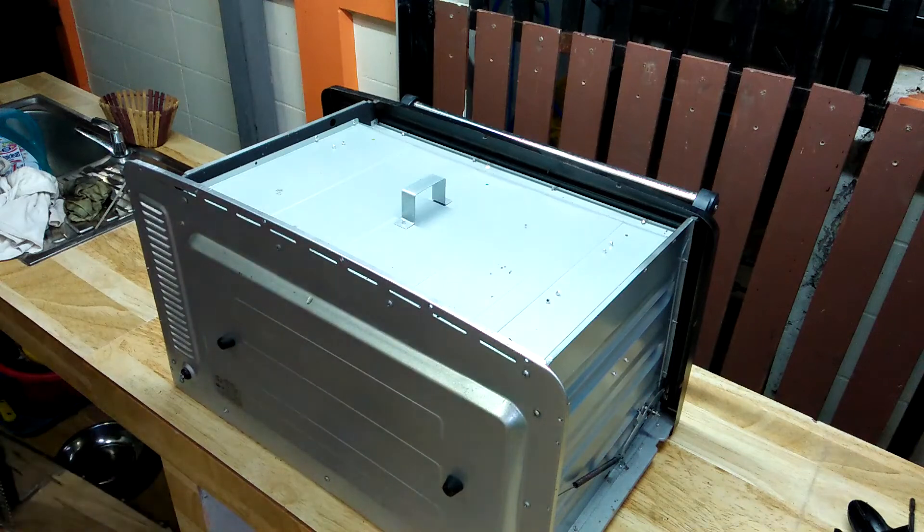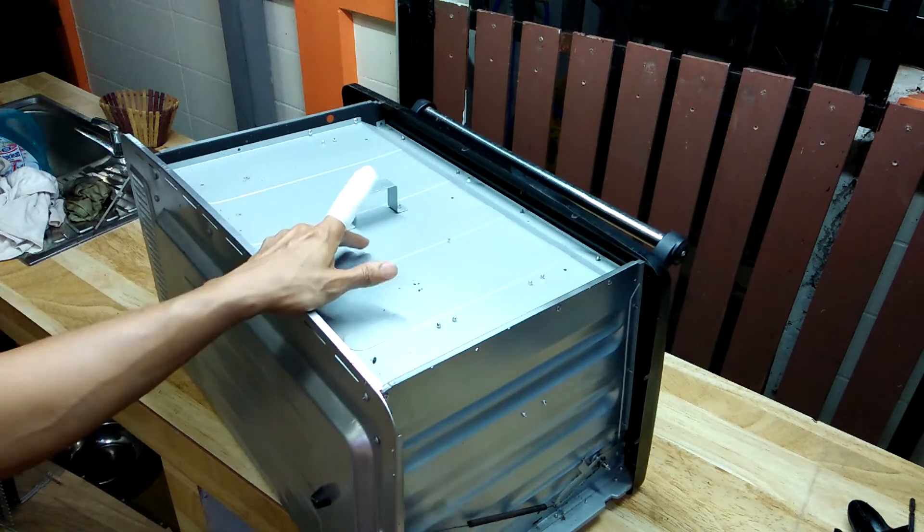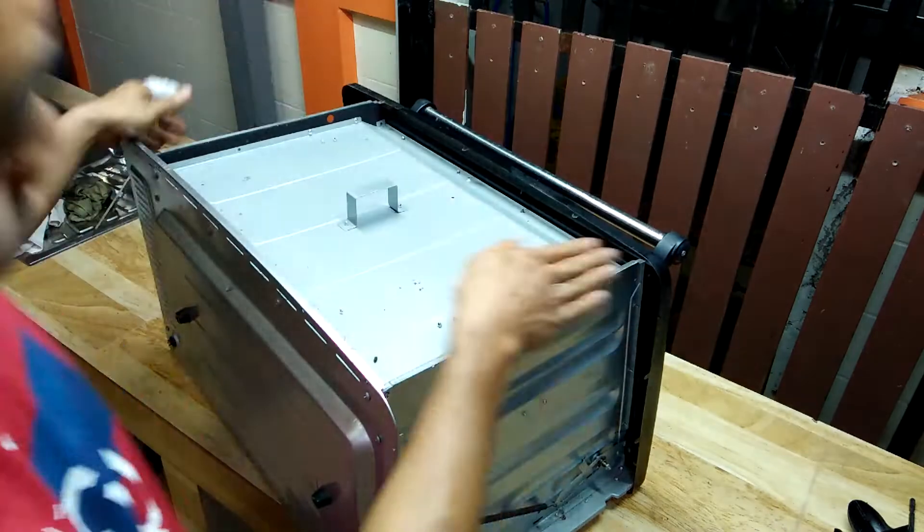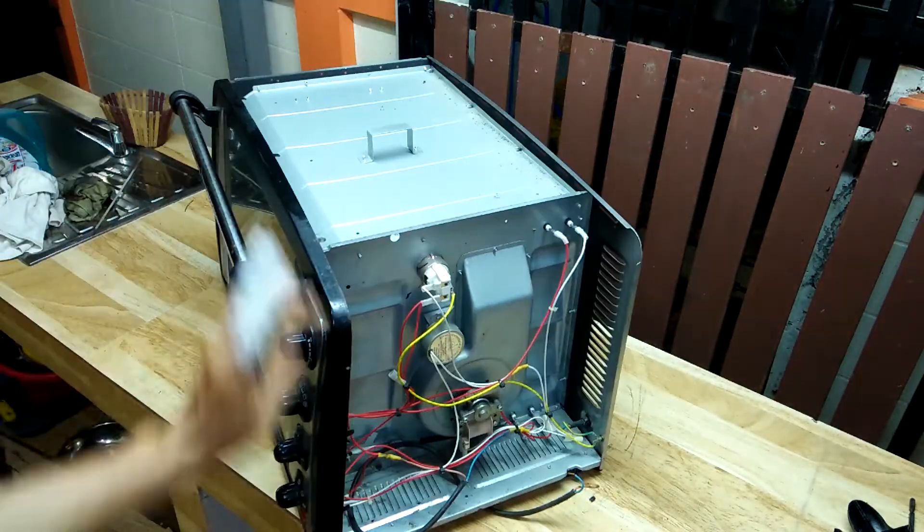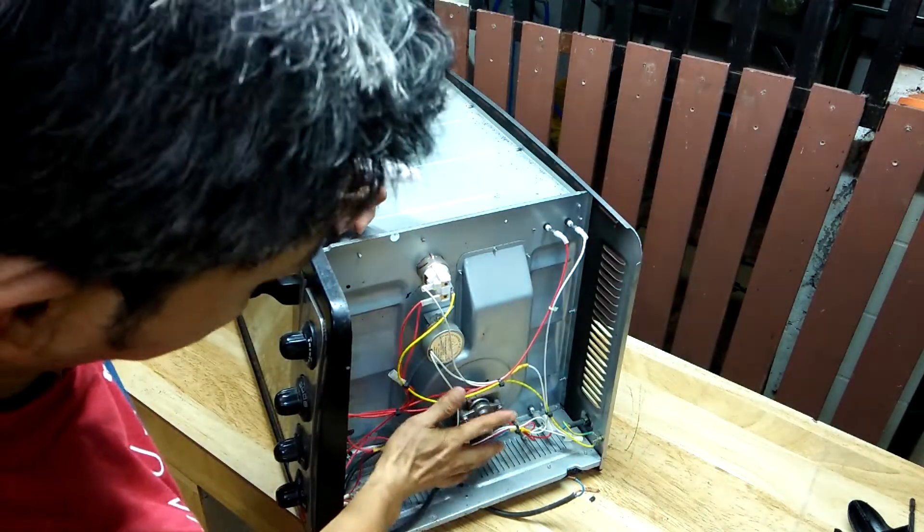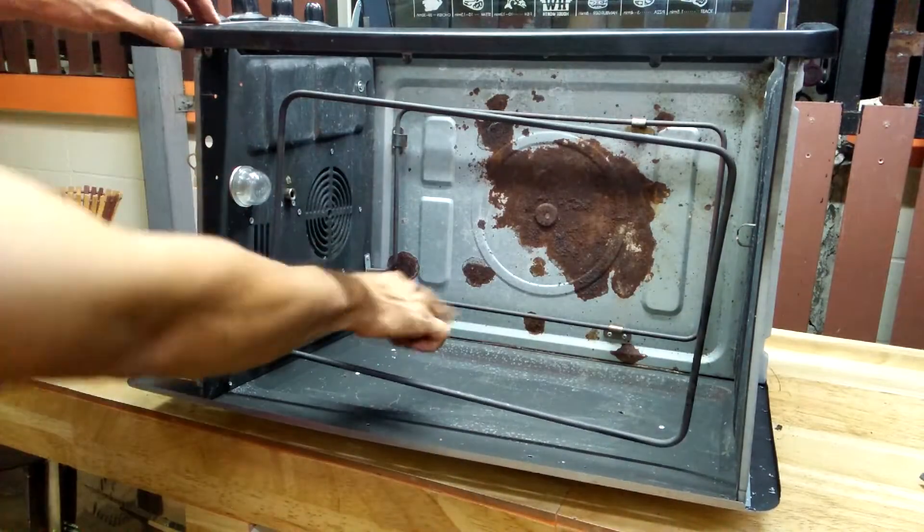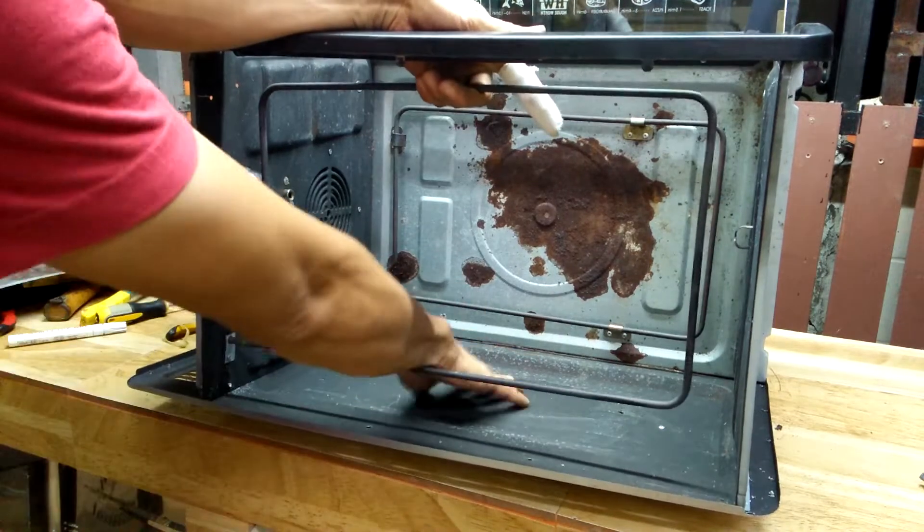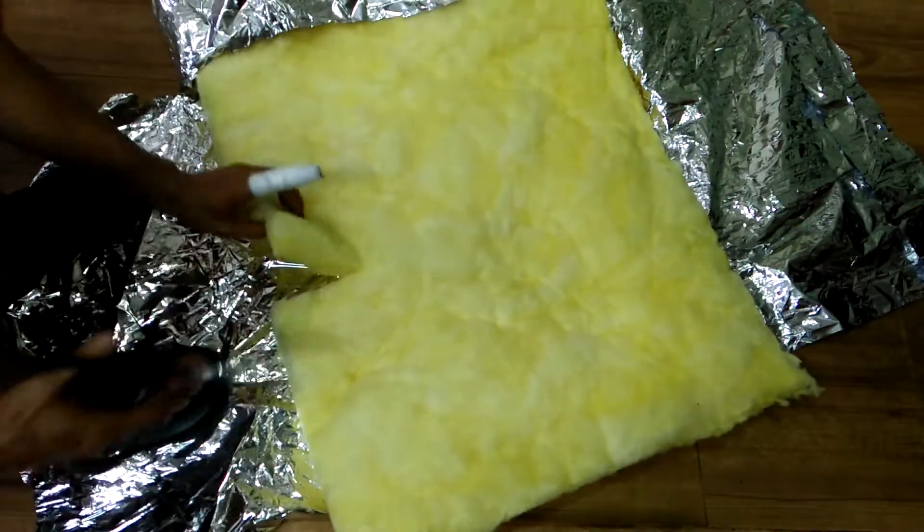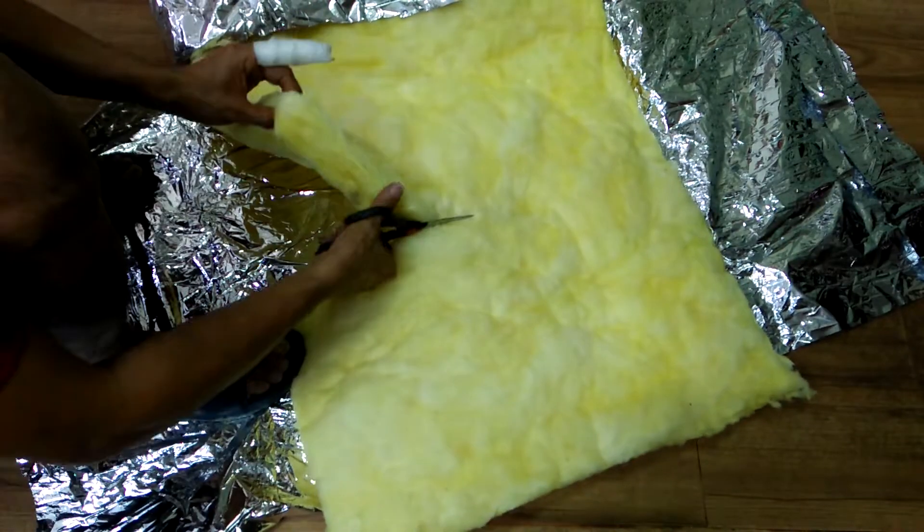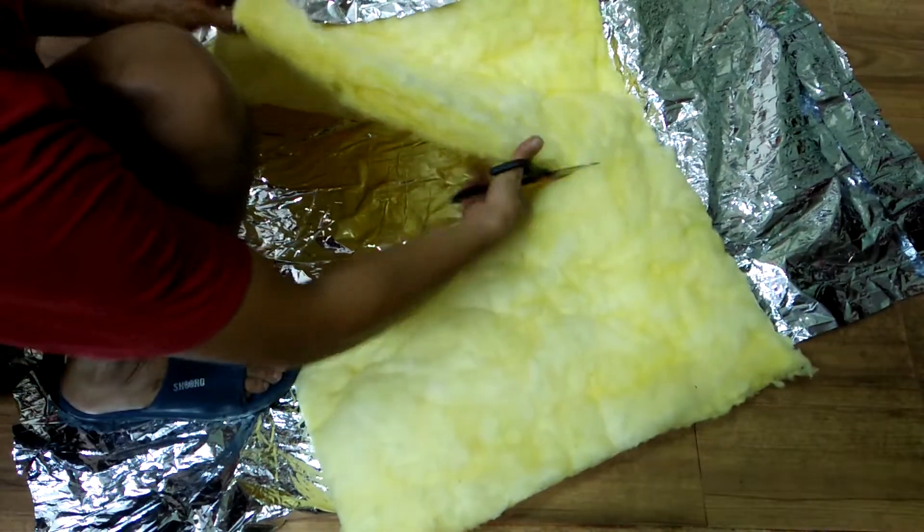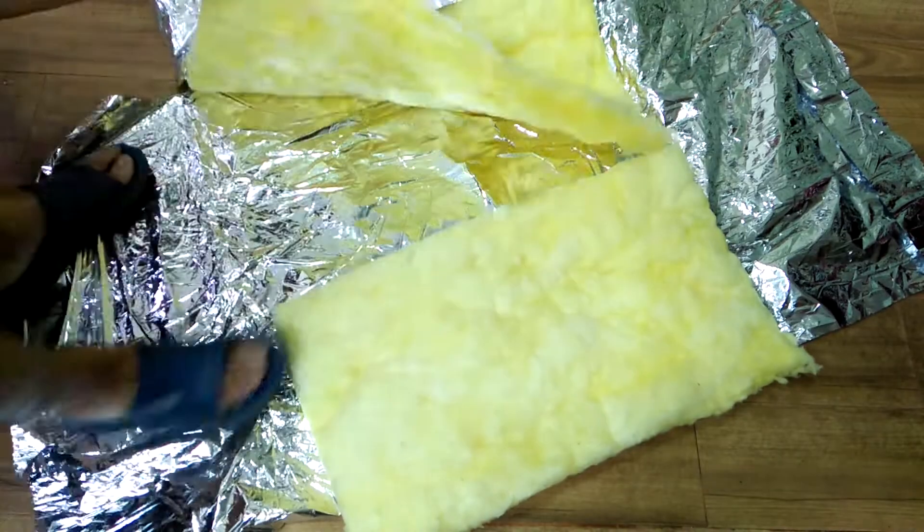I removed the outer shell, and you can see there is no insulation between the inner and outer walls either. That is another area where we can improve. I removed the top inner wall to make the back wall accessible. The back wall is originally a single layer of sheet metal as well. I bought this fiberglass insulation to sandwich between the inner and outer walls of the oven for insulation.